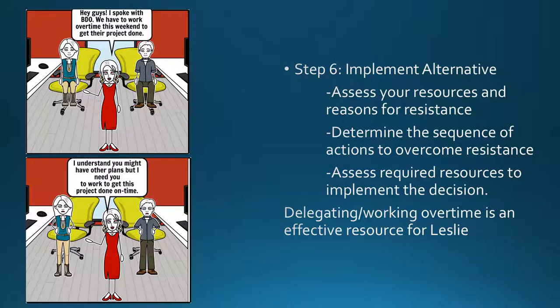Step 6: Implement alternative. Access your resources and reason for resistance. Determine the sequence of actions to overcome the resistance. Access required resources to implement the decision. Delegating and working overtime is an effective resource for Leslie. Hey guys, I spoke with BDO. We have to work overtime this weekend to get their project done. I understand you might have other plans, but I need you to work overtime to get this project done on time.